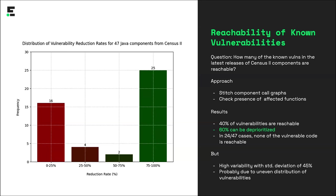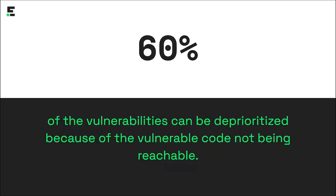In so many other cases, vulnerable methods hidden in dependencies are not reachable. Out of approximately 300 Census 2 components examined, 47 had vulnerable dependencies. For those 47 Java components, only 40% of the vulnerabilities on average were actually reachable, meaning 60% of vulnerabilities can be deprioritized. In 24 out of 47 cases, there was actually no vulnerability left following the reachability analysis. There is a high variability with a standard deviation of 45%, since vulnerable code is not evenly distributed — hitting something like Jackson DataBind, which has multiple vulnerabilities, can skew results significantly.